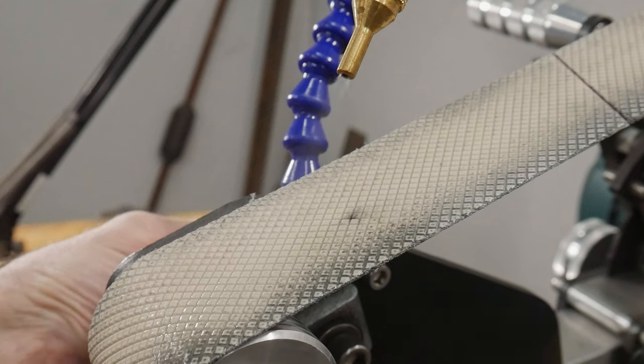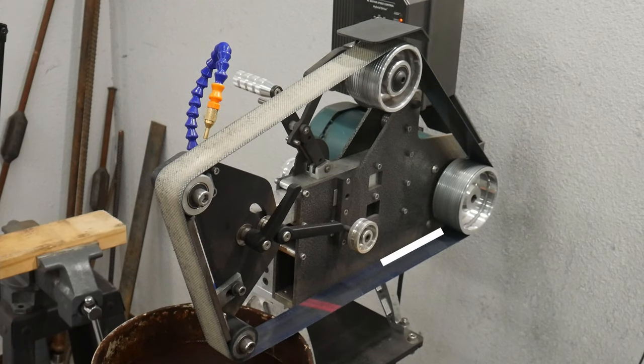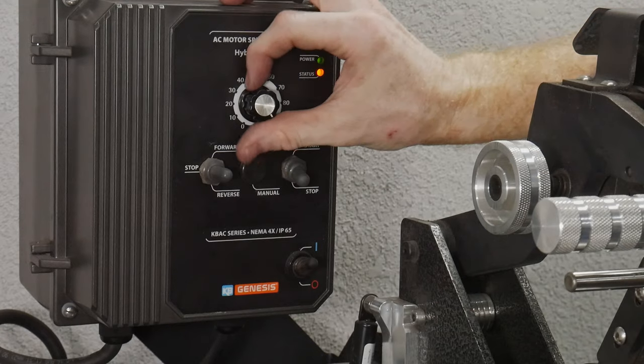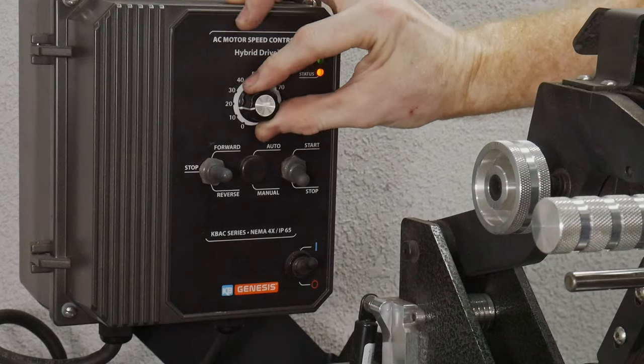To get a more convenient sharpening angle, tilt your flat platen towards you. Your target for edge contact on the belt will be right behind the top wheel of the platen. Ideally you can run the belt in reverse with the edge facing away from you.